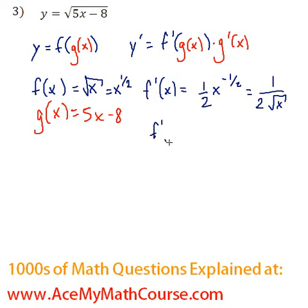But we're looking for f prime of g of x. So we're just going to replace the 5x minus 8 for the x. Right there. So this is f prime of g of x.